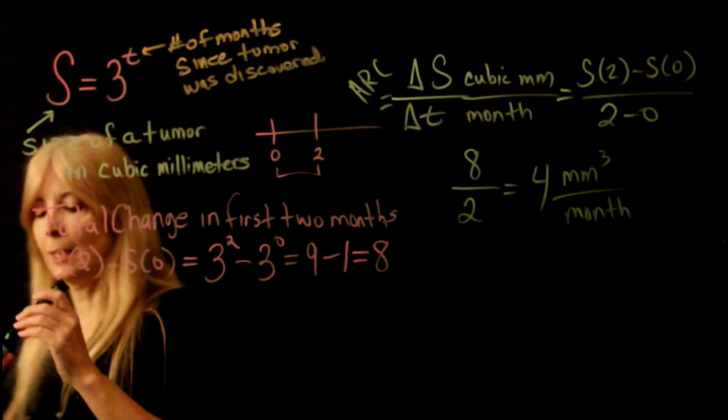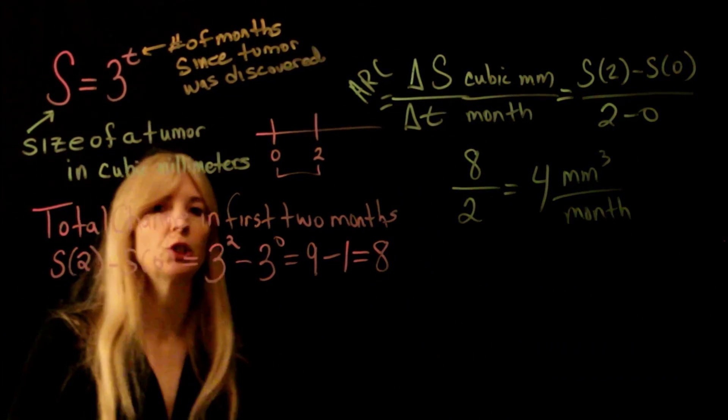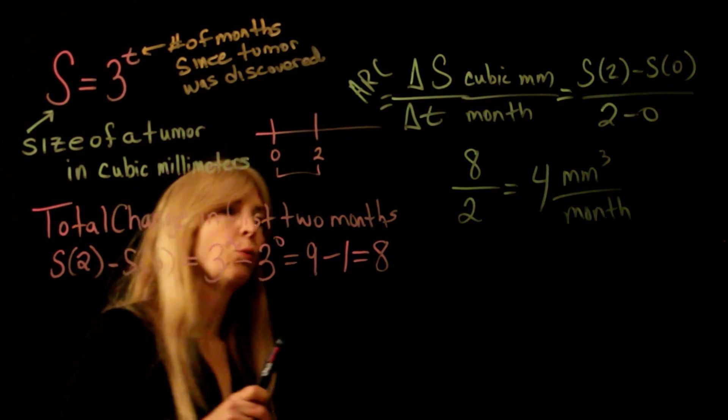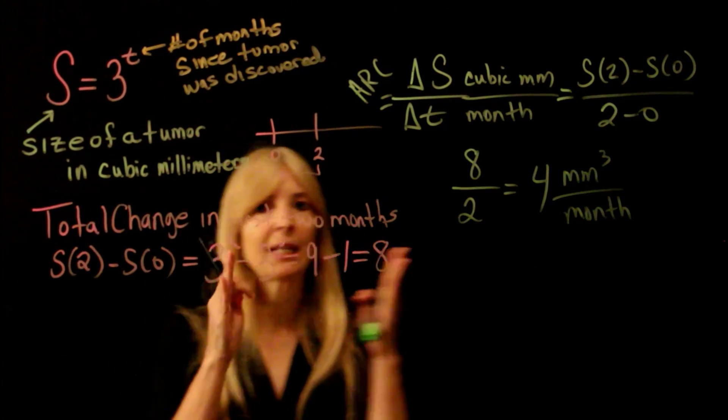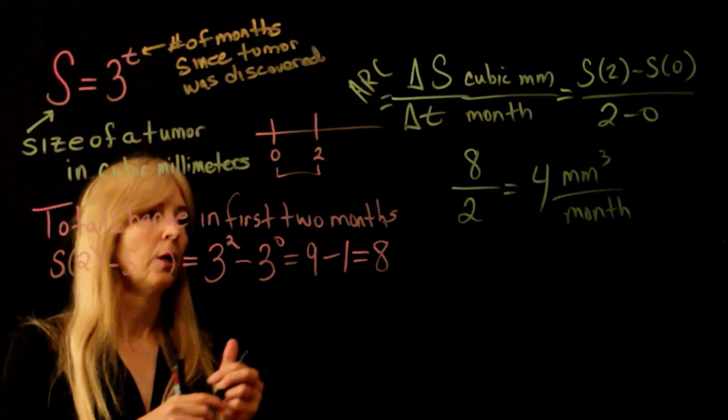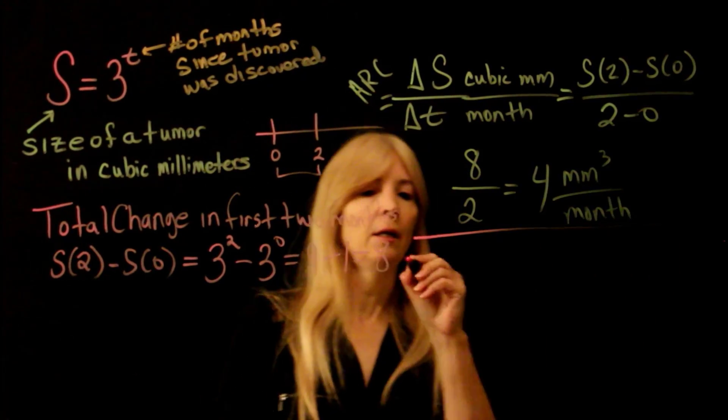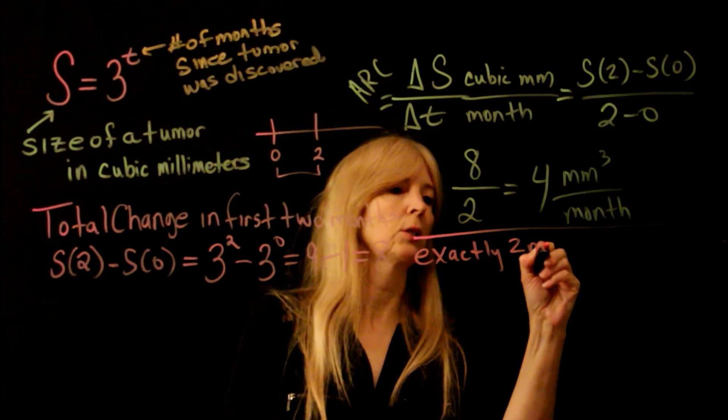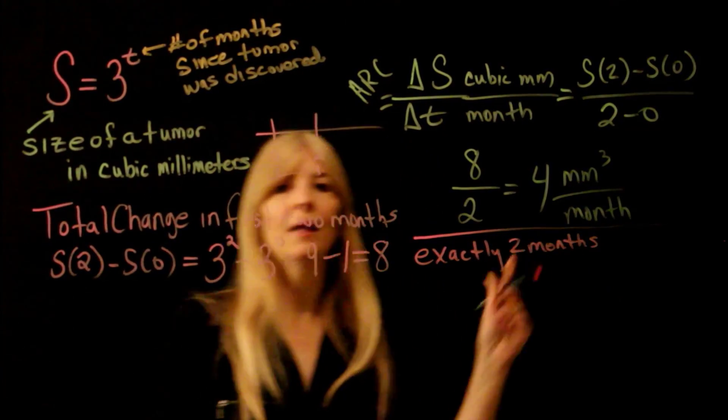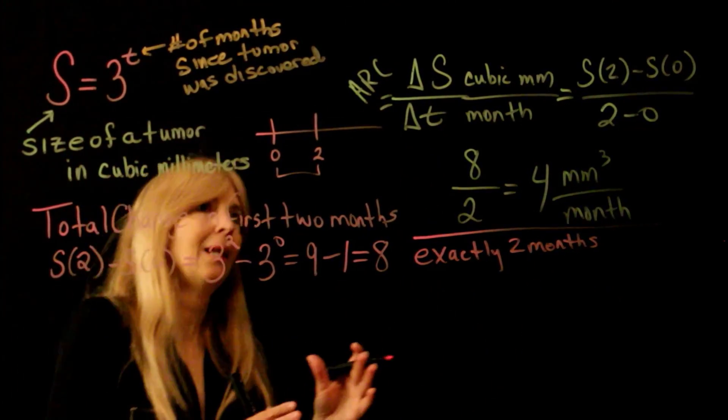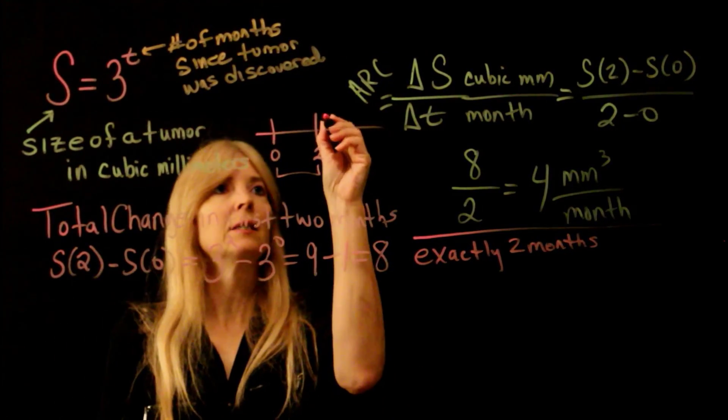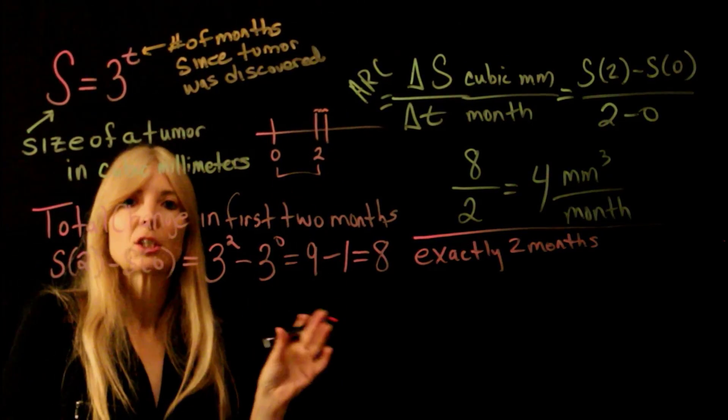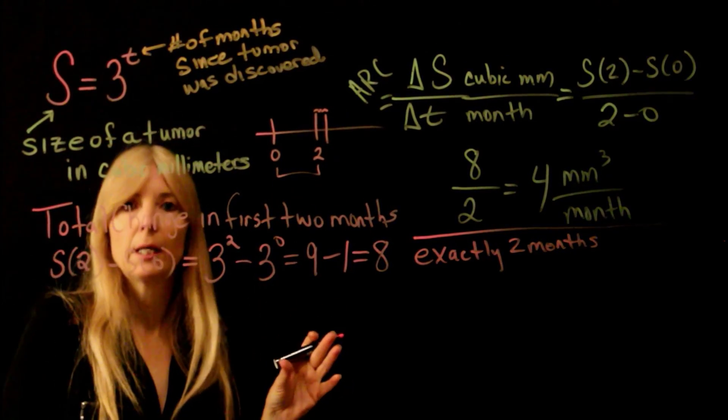All right, then it says estimate the rate at which the tumor is growing at exactly two months. This is where you're getting into the close that gap off the H. Okay, so at exactly two months would mean that I need two plus a little distance. So in other words, I can't get exactly two, but I could put that gap, make it as small as I wanted, to get it smaller.